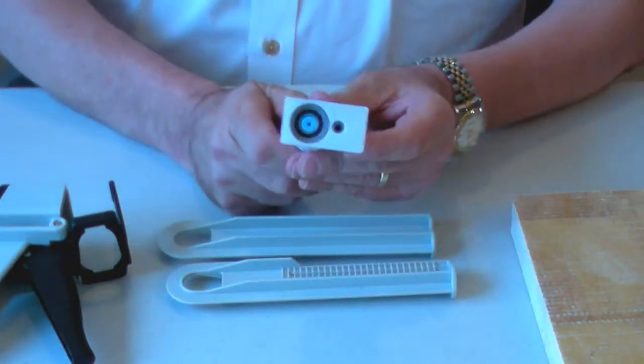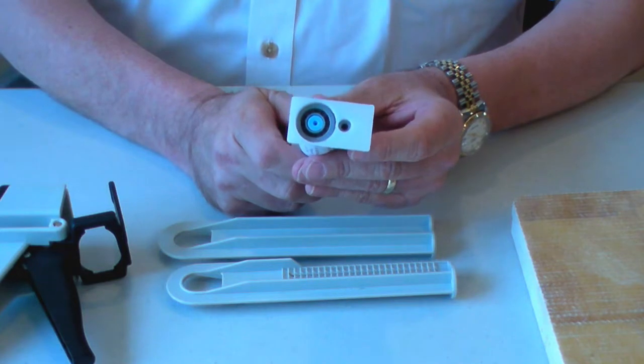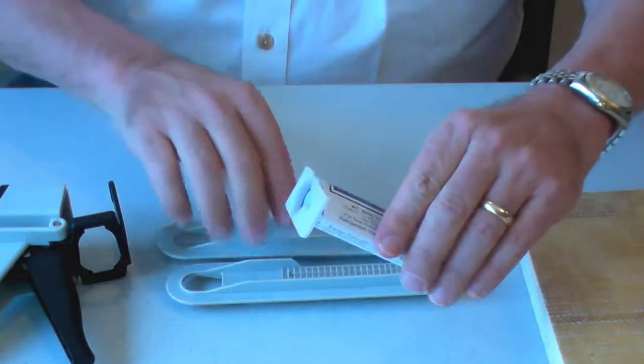AT6030 is a 10 to 1 adhesive. This requires different mixing tips and different plungers in the gun.